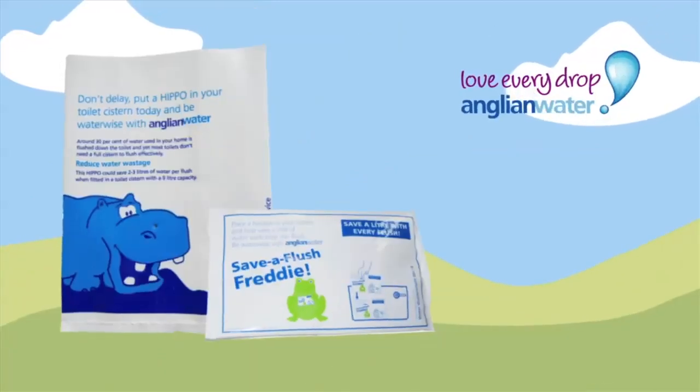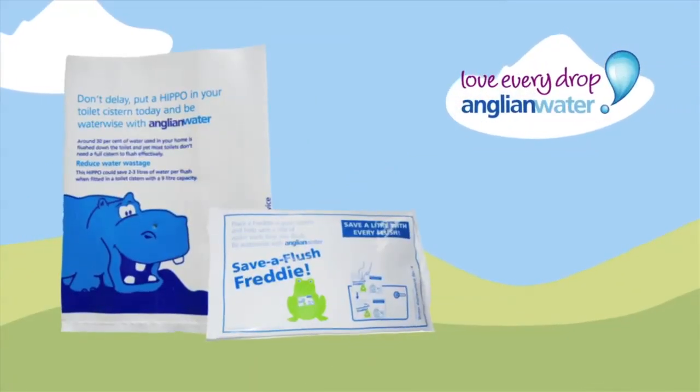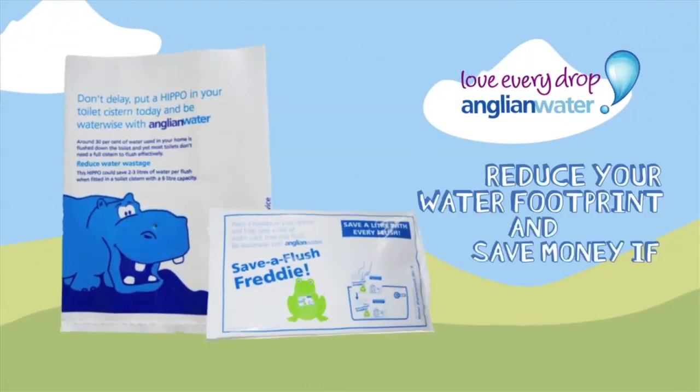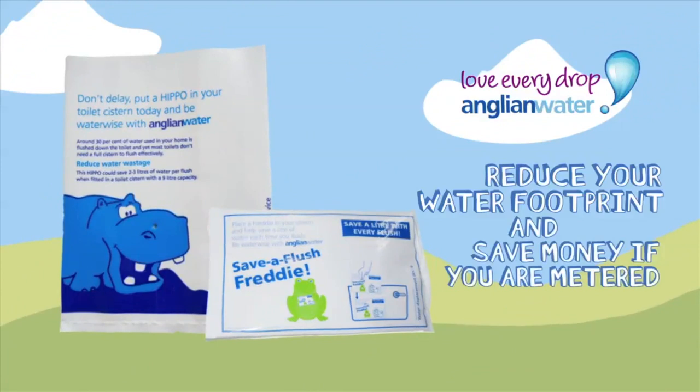At Anglian Water, we offer two types of displacement device to help you save water every time you flush, reducing your carbon footprint and helping you save money if you're on a water meter.